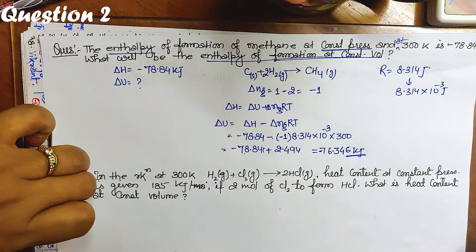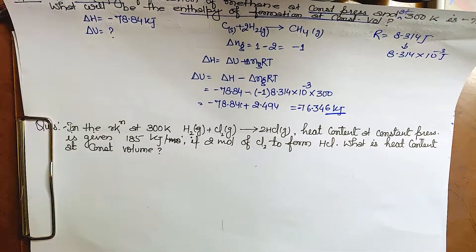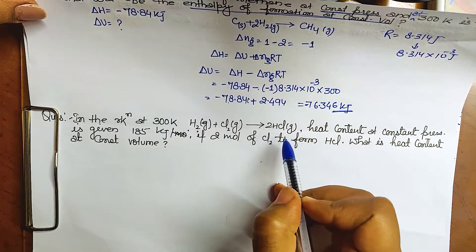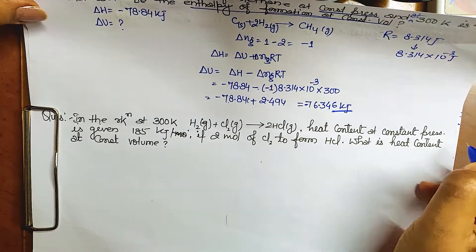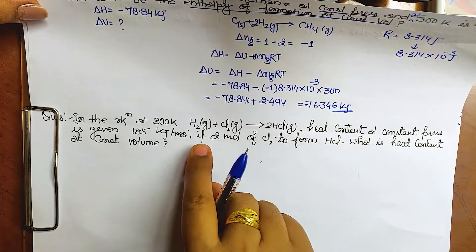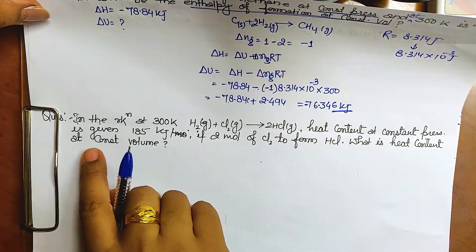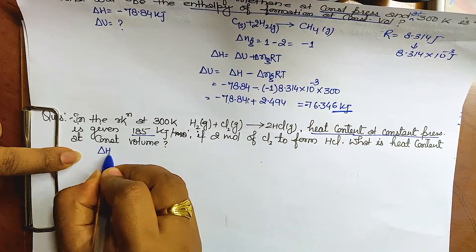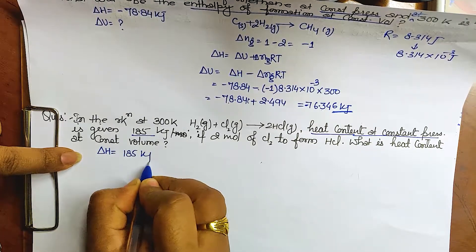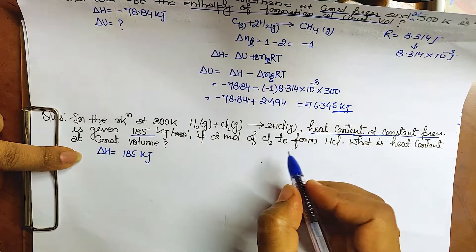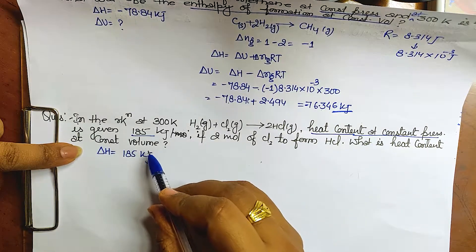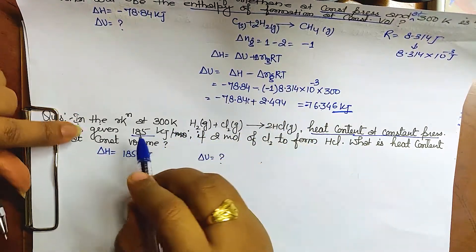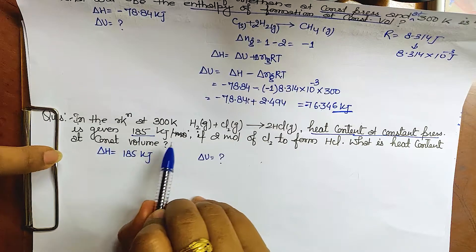The second question: In a reaction at 300 Kelvin, H₂(g) + Cl₂(g) → 2HCl(g). The heat content at constant pressure is given as delta H = 185 kilojoule. We need to find the heat content at constant volume, which means finding delta U.